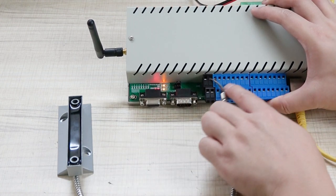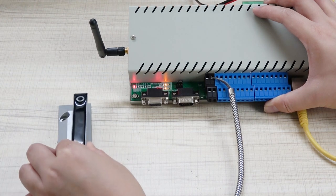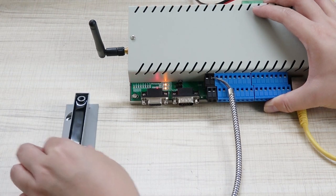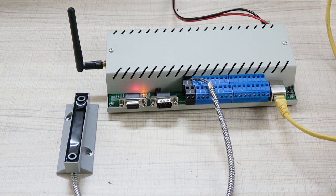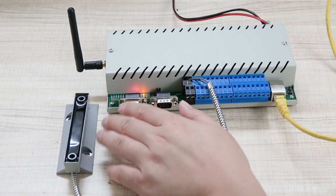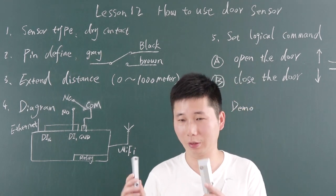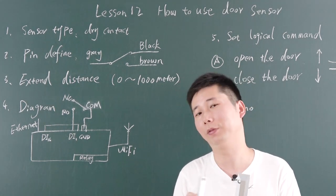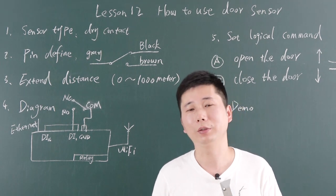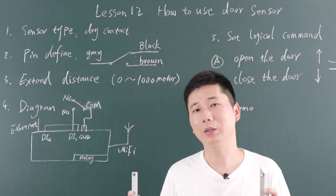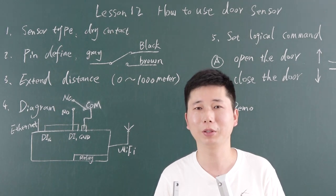So you can connect with many digital input sensors for this automatic function. This is how to use the door sensor. Now I think you can use the door sensor for your home automation projects. In the next video, I will show you some other interesting sensors and how to use them. Thanks for watching.